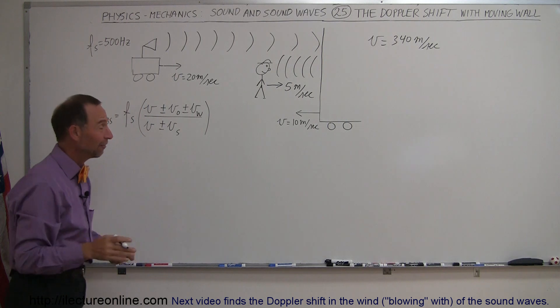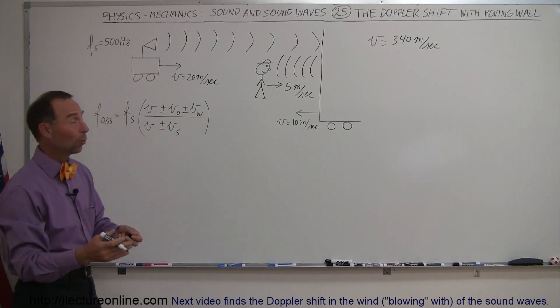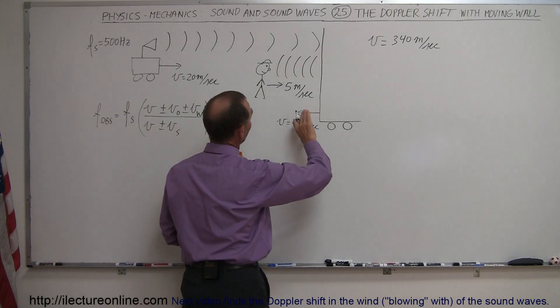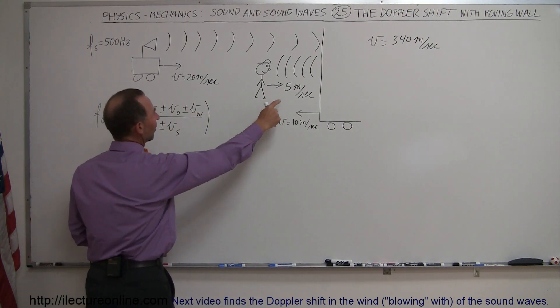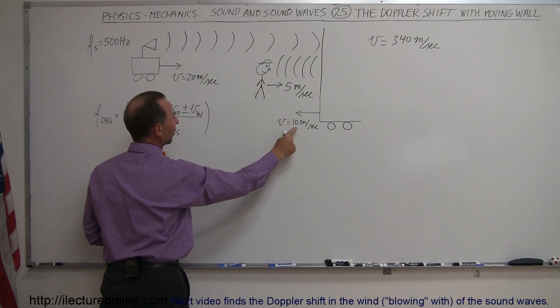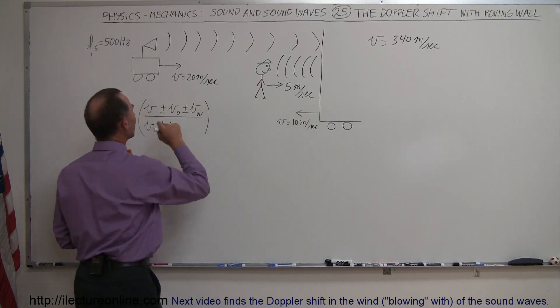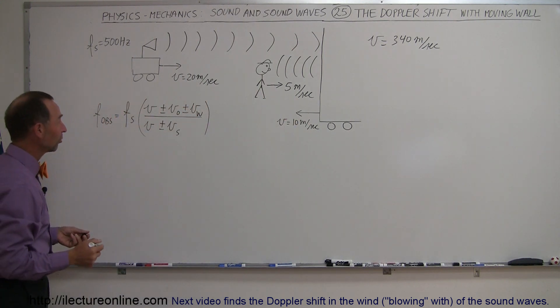All we have to decide now is if it's a plus or minus because the wall could be moving towards the observer, and the wall, of course, could be moving away from the observer. All right, we have the velocities, 5 meters per second for the observer, 10 meters per second for the wall, 20 meters per second for the source. So, what will this look like?